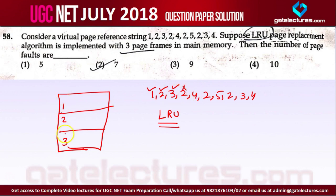4 is not in memory and memory is already full, so we have to replace one of these pages with 4 — whichever is least recently used. As we can see, 2 is used just now, 3 is used just now, but 1 is the least recently used, which means 1 will be replaced with 4. Then 2 is already in the memory.